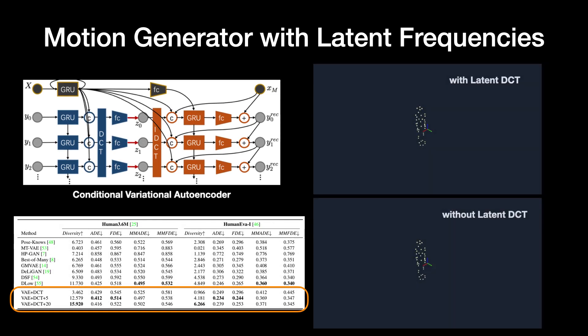For marker prediction, we find that the latent DCT space can produce motions with finer grain and higher frequency movements than the competing methods.